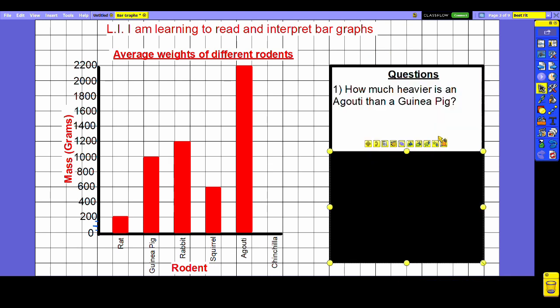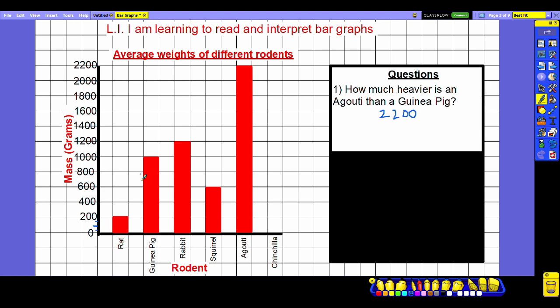Question one is another difference question: how much heavier is an agouti than a guinea pig? We're being asked the difference therefore it's subtraction. An agouti is 2200 grams or 2.2 kilograms, whereas a guinea pig on average is about 1000 grams.